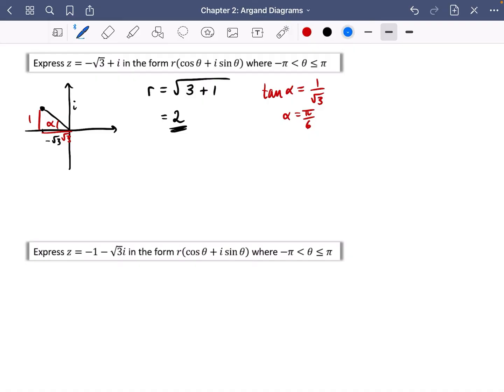But remember, we're not interested in alpha, we're interested in the argument. So the argument of z, which is theta, is going to be pi minus alpha, which is five pi over six. So putting this all together, pulling the value of r and the value of the argument, we can say that z is equal to 2(cos five pi over six + i sine five pi over six).